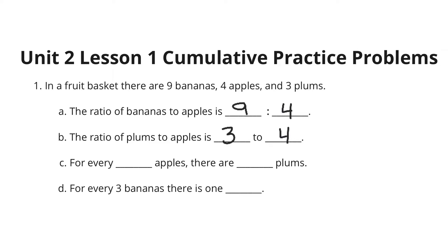For every blank apples, there are blank plums, so there are 4 apples and 3 plums. And for every 3 bananas, there is 1, well, I know we have 9 bananas to start. What could it break down to? Well, 9 bananas and 3 plums. When I divide 9 by 3, I get 3. If I divide 3 by 3, I get 1. So, I am going to say 1 plum here.